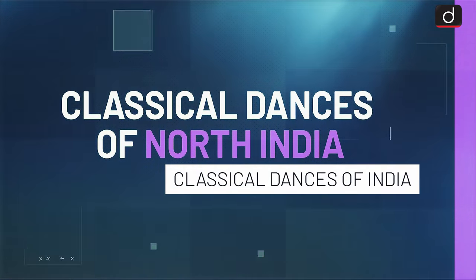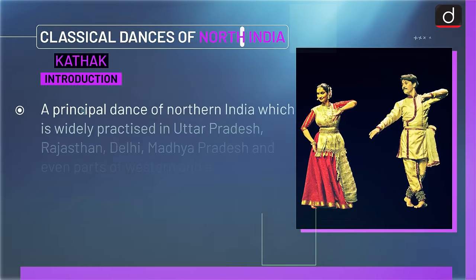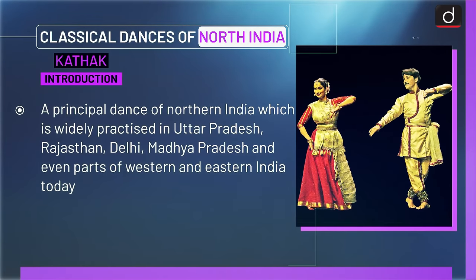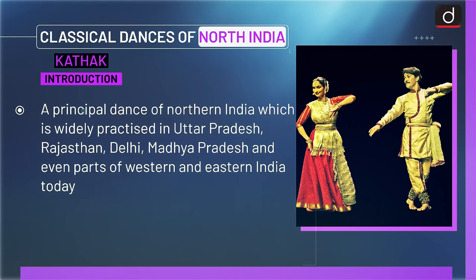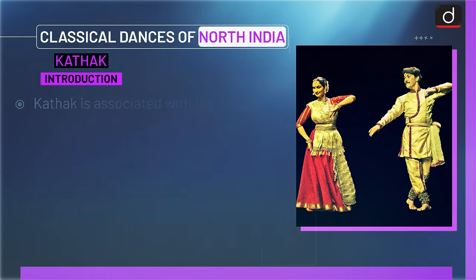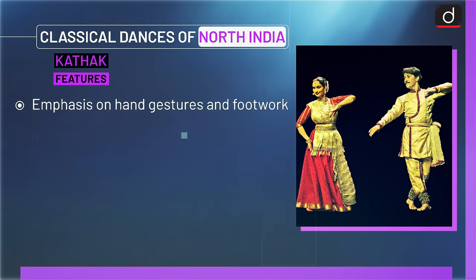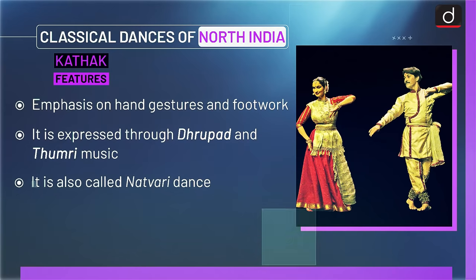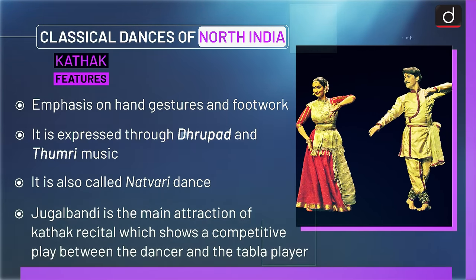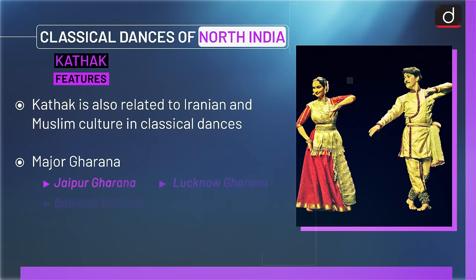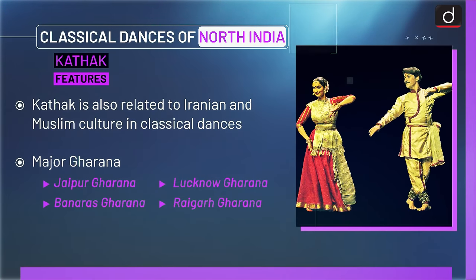Now let's have a look at the classical dance of Northern India — Kathak. It is a principal dance of Northern India, widely practiced in Uttar Pradesh, Rajasthan, Delhi, Madhya Pradesh and even parts of Western and Eastern India today. Kathak is associated with the Rasleela tradition of Braj Bhoomi in Uttar Pradesh. The word Kathak is derived from 'Katha', meaning a story. In Kathak, emphasis is mainly on hand gestures and footwork. It is expressed through Dhrupad and Thumri music and is also called Natwari dance. Jugalbandi is the main attraction of Kathak recital, showing a competitive play between the dancer and the tabla player. Kathak is also related to Iranian and Muslim culture. Major gharanas of Kathak are Jaipur gharana, Lucknow gharana, Banaras gharana and Raigarh gharana.